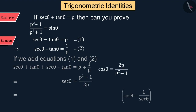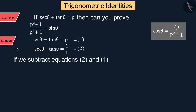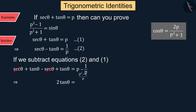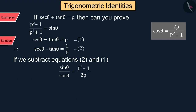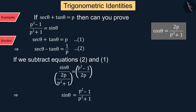Similarly, if we subtract equation 2 from equation 1, we get tan θ = (p² - 1) / (2p). Converting tan θ to sin θ upon cos θ and substituting the value of cos θ, we get the same value of sin θ that was given in the question. Thus we proved that both sides are equal.